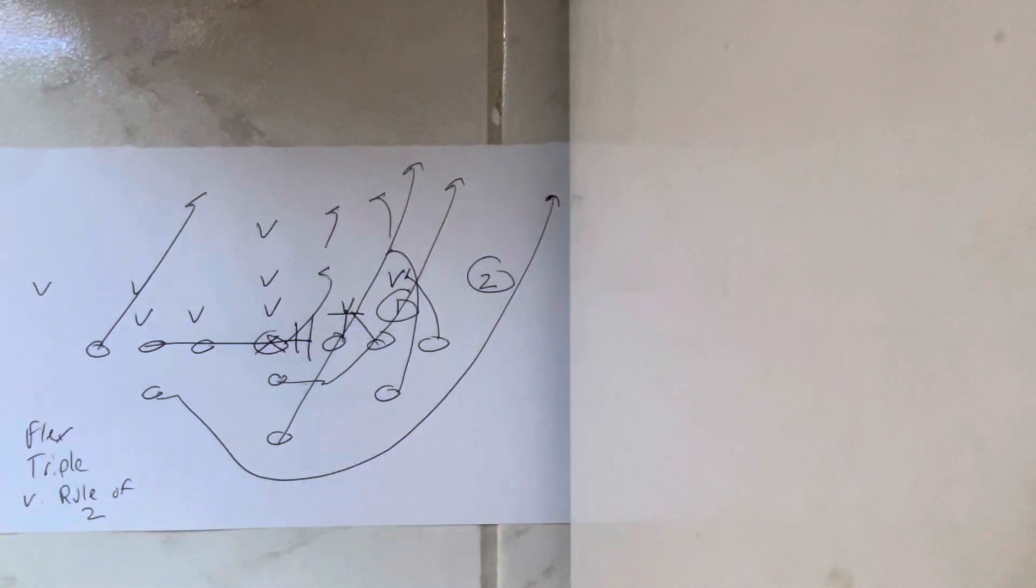Dr. Selle here, and I had a client ask me about this. Basically the answer to this question is if you wind up in the flex formation and want to run triple option, what happens if they give you a rule of two? So number one's a defender, touch the tackle, and then you've got a corner that's within five yards of the receiver.